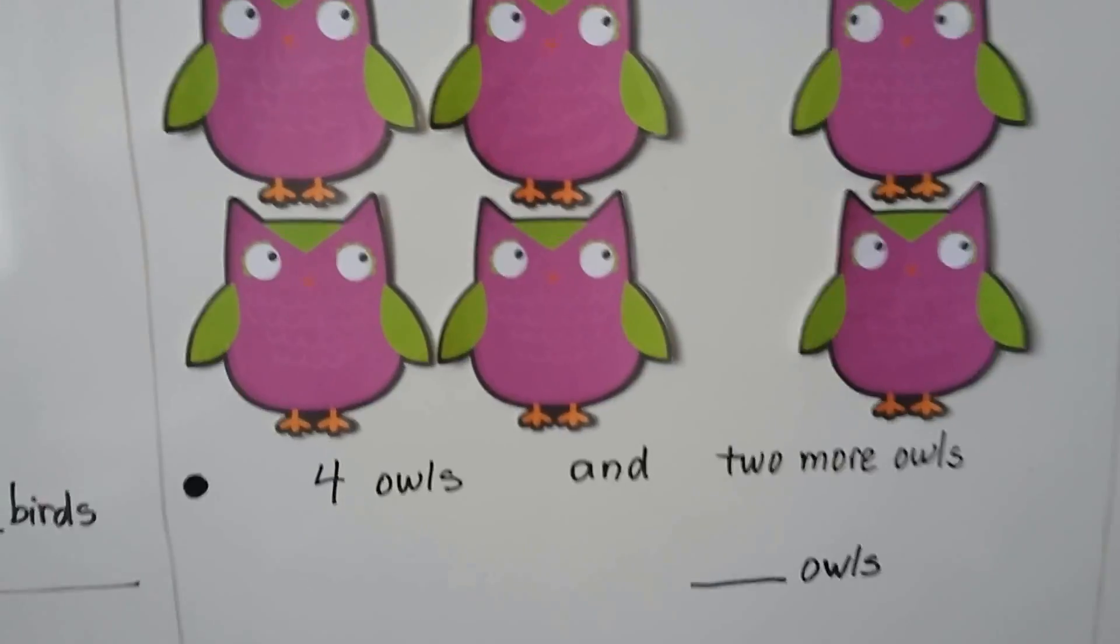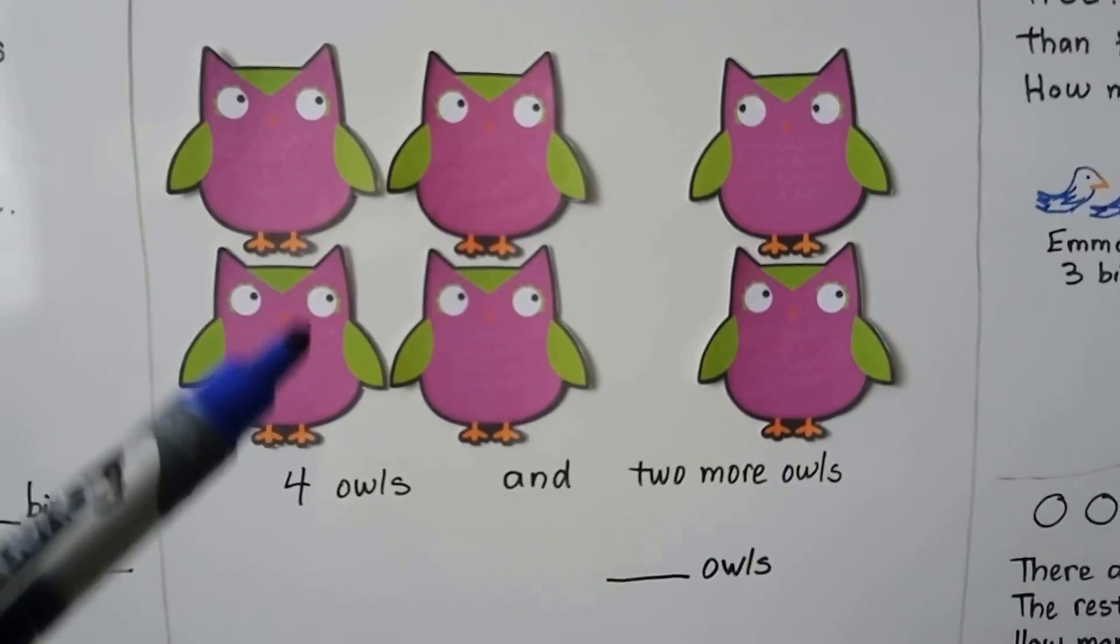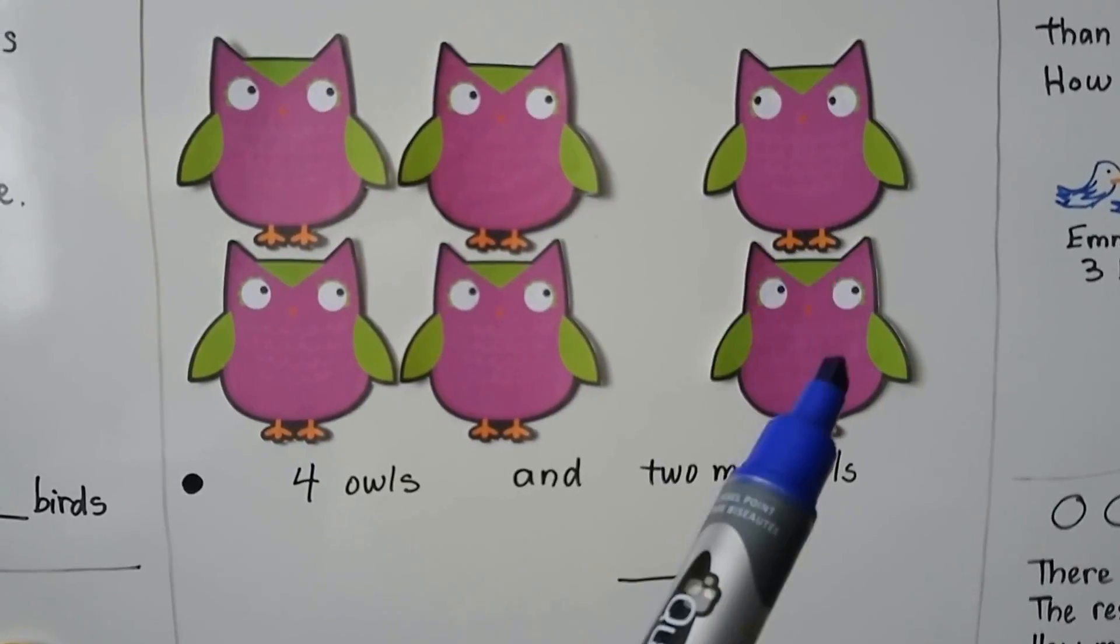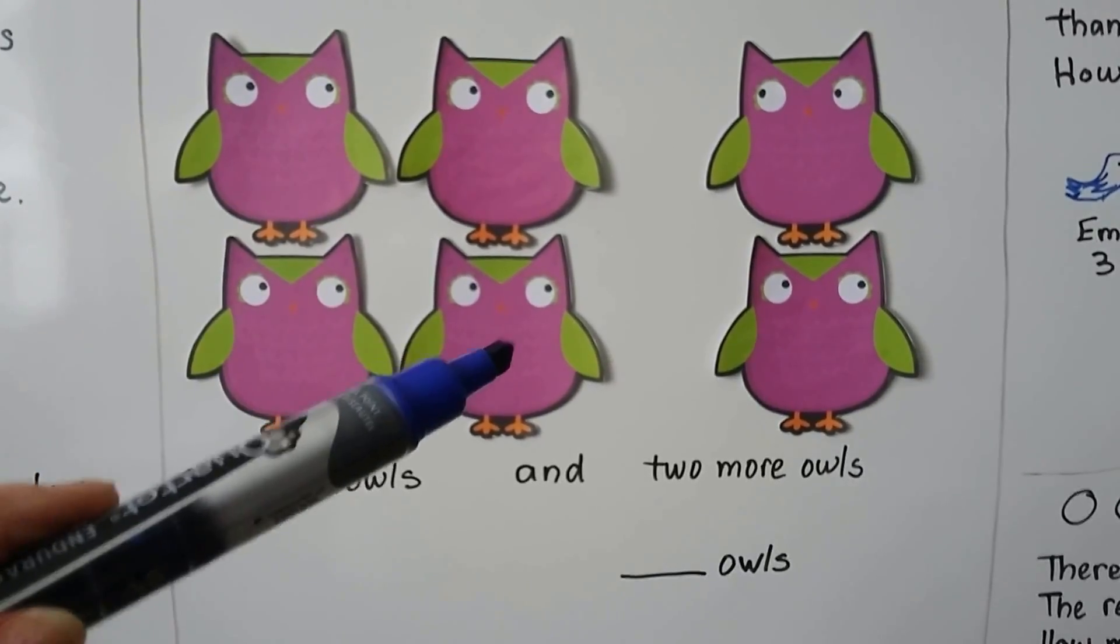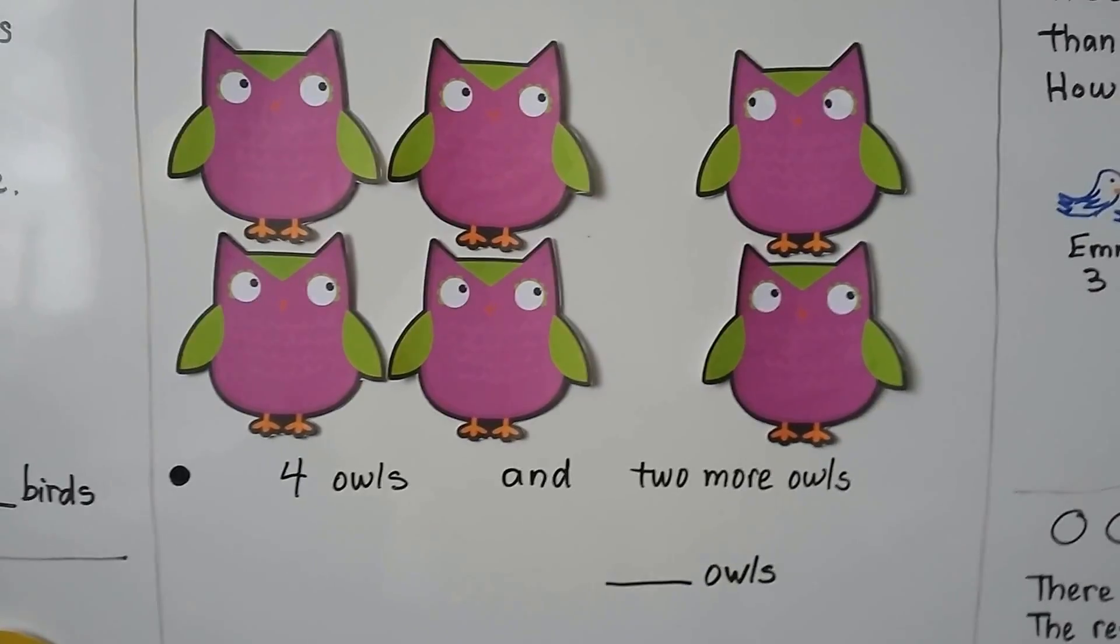Here we have some owls. We have four owls. One, two, three, four. And two more owls. One, two. We can count them all together. One, two, three, four, five, six. There's six owls all together.